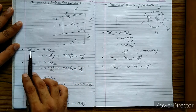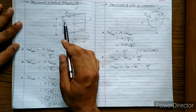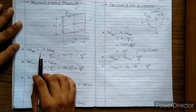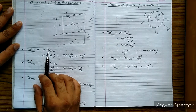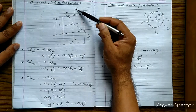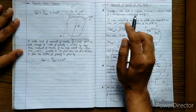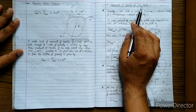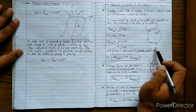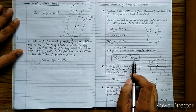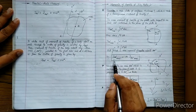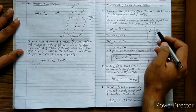If we want to find the mass moment of inertia of this rectangular plate about axis AA', it will be equal to ρt multiplied by the area moment of inertia of this plate about the same axis. We learned in the previous topic that to find the mass moment of inertia of any thin plate about any axis, you multiply the area moment of inertia of that plate about the same axis by ρt.